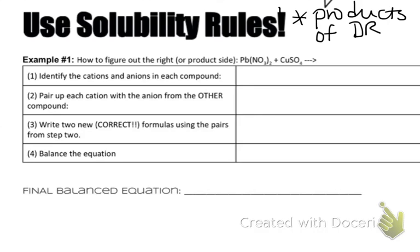So identify the cations and anions in each compound—that's basically writing out the reactants for your ionic equation, right? So I have lead, which is +2; I have nitrate, which is -1; I have copper and I have sulfate. I know that copper is +2 because sulfate is -2 and there's only one of each, right? So we've done that before. Now you pair them up with the other thing, so you're just predicting your products. We're going to stick lead—